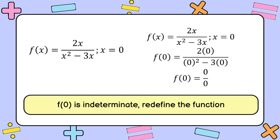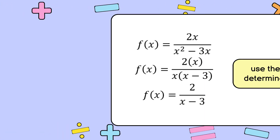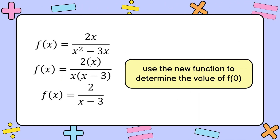If we have an indeterminate value, we must redefine the function to give us a real value. Factoring 2x over x squared minus 3x, we get 2 times x over x times the quantity x minus 3. Canceling x, we are left with 2 over x minus 3.